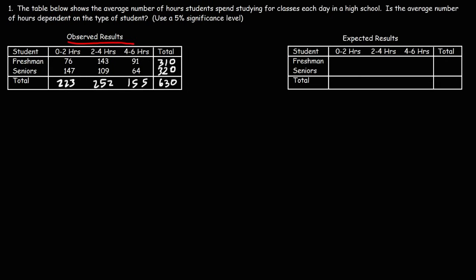Before we move on to the next table, let's talk about the null hypothesis and the alternative hypothesis. The null hypothesis is that the average number of hours is independent of the type of student. The alternative hypothesis is what we want to test — we're testing to see if the average number of hours is dependent on the type of student.